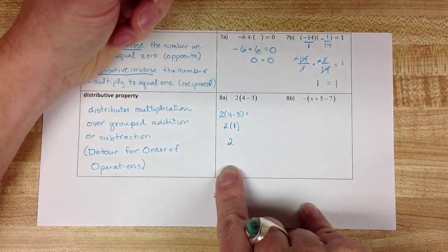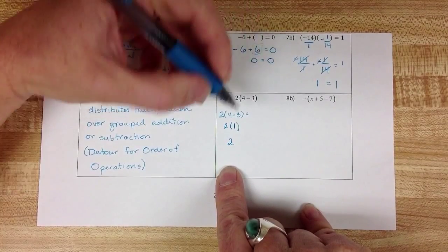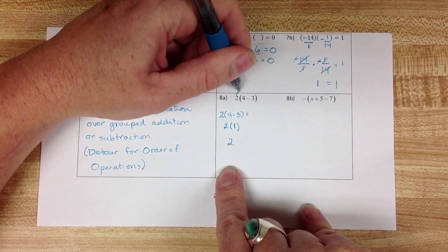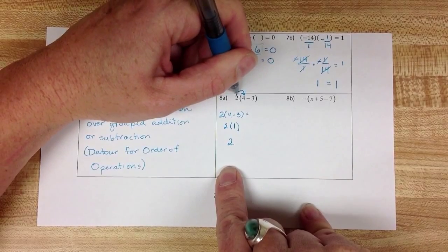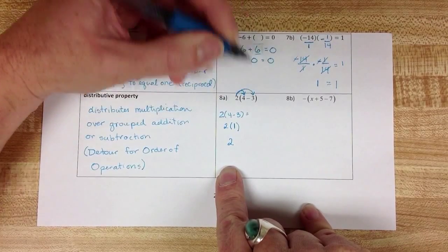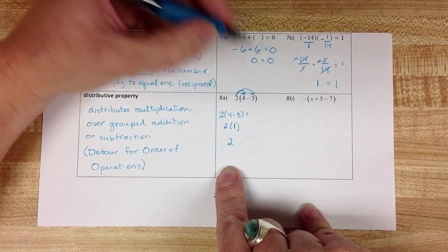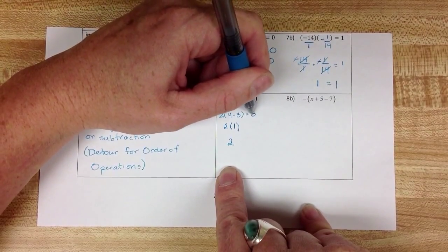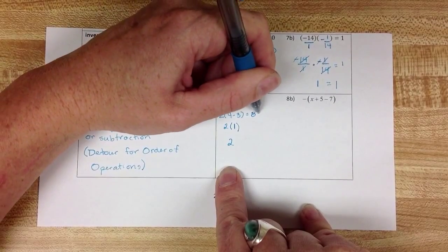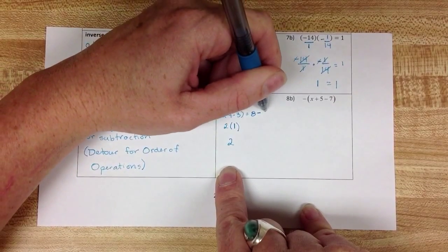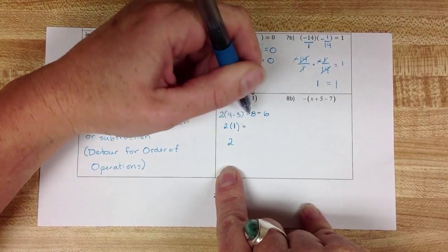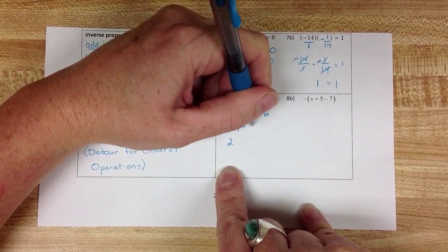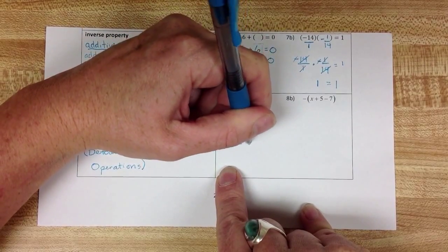What the distributive property tells me is that another way to get to that same answer is to take this 2 and distribute it to the 4 and the negative 3. So 2 times 4 would become 8 and 2 times 3 would become 6. And 8 minus 6 is also 2.